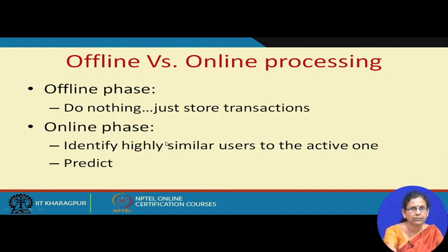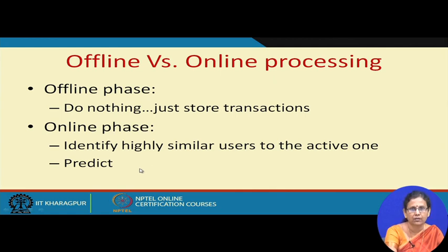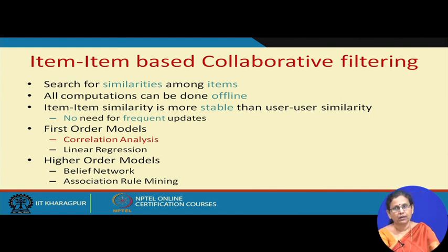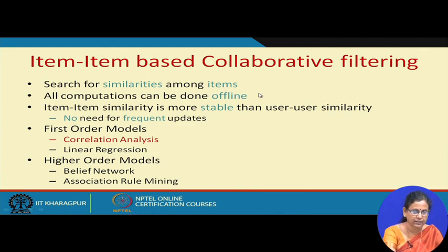In the offline phase, you simply store the past user transactions. In the online phase, you find out the similarity of the active user with other users, then predict. This is quite time consuming as the dataset grows, so it is no longer feasible for commercial application. However, this idea can be extended to item-item collaborative filtering, where the search for similarity among items is first made and all the computation for generating the item-item similarity matrix is done in offline manner.